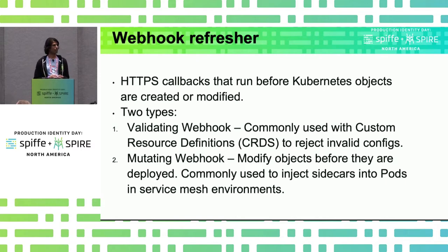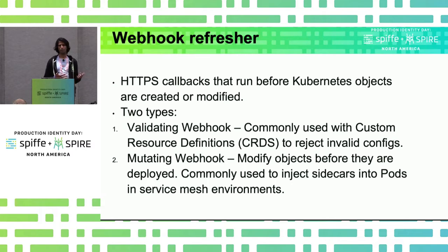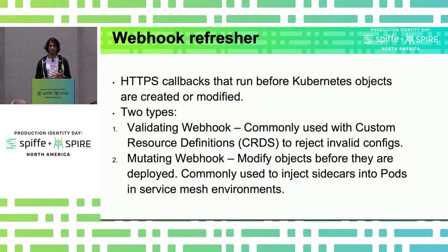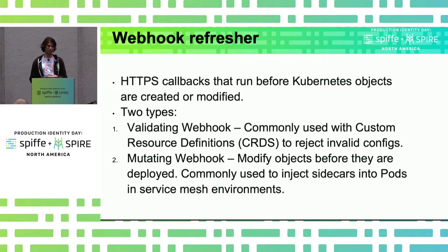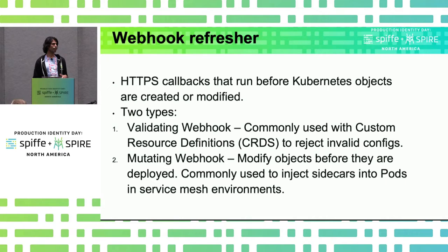The first type is a validating webhook, which is used to validate configurations and make sure they're okay — nothing weird, nothing illegal or in a state you don't want. A very common use case is with custom resource definitions, or CRDs, where you can reject invalid configs. A good example in the KubeBuilder book is rejecting invalid cron configs. The second type is a mutating webhook. If you use service meshes like Istio, they typically deploy a mutating webhook to inject the sidecar into the pod.